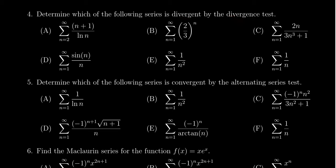If you look at the second one, B, this is a geometric series and its ratio is two thirds. It's convergent, so it's not that one.